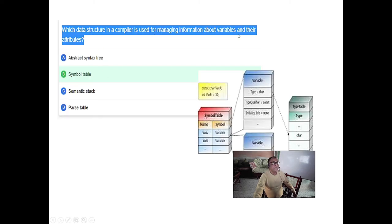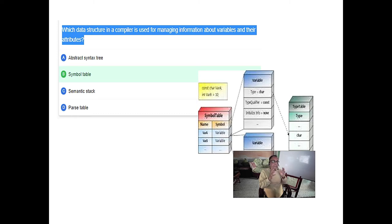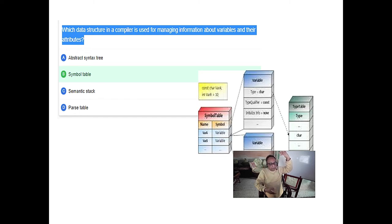Which data structure is used in managing information about variables in the symbol table? The symbol table can be implemented as an array or a tree, but 99% of the time it is a hash table. The complexity of array and tree is higher, but a hash table can give complexity near to O(1). It has to be very fast because the whole symbol table has to be stored in primary memory. When the compiler is running a 100-line program, the symbol table can have a thousand or more entries. Every stage — from lexical analysis, syntax, semantic, code generation, code optimization — consults the symbol table. The data structure should be fast, like a dictionary in Python, which is essentially the same as a hash table.